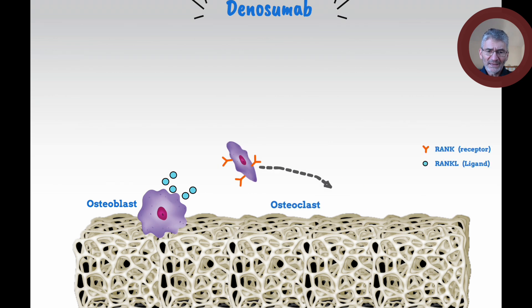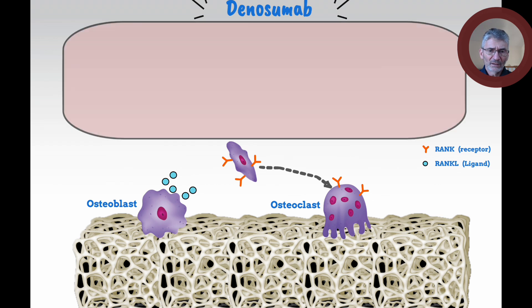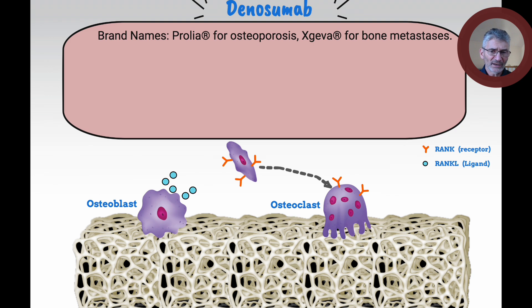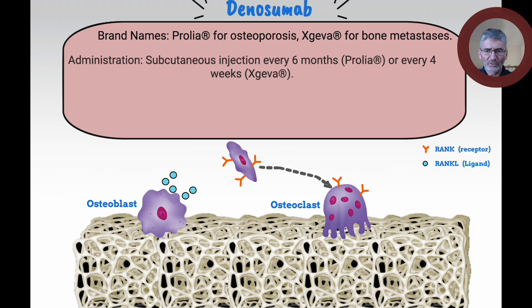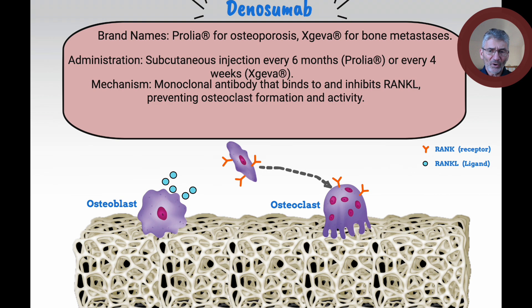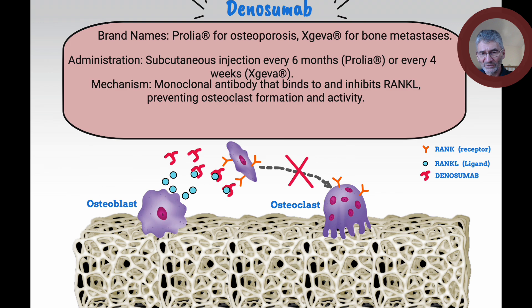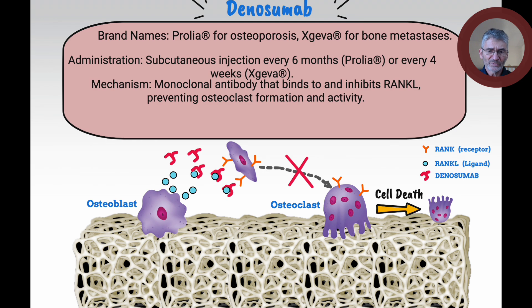Now let's look at denosumab. You can see our osteoblast, our osteoclast, and the osteoclast precursor. The brand names for denosumab are Prolia for osteoporosis and Xgeva for bone metastases. It's administered subcutaneously every six months for Prolia or every four weeks for Xgeva. It's a monoclonal antibody that binds to and inhibits RANKL, preventing osteoclast formation and activity. The denosumab prevents RANKL from reaching the RANK receptors, meaning cells are not matured into osteoclasts, and on the osteoclasts themselves it causes cell death. Osteoclastic activity is decreased, reducing bone resorption, increasing bone density, and decreasing fracture risk.